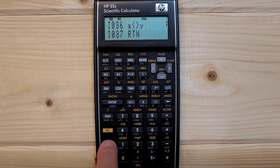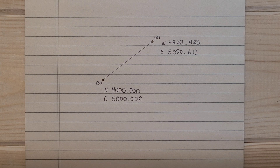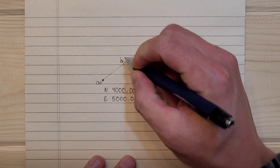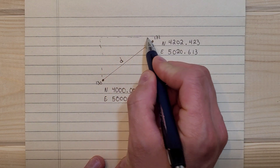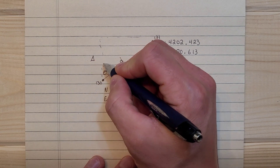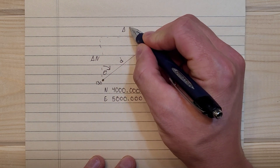Now we can go right shift program. Here are two node points: point 130 and point 131. Both have northings and eastings. This inverse program is going to allow us to find D — the distance between each point — and also the azimuth.